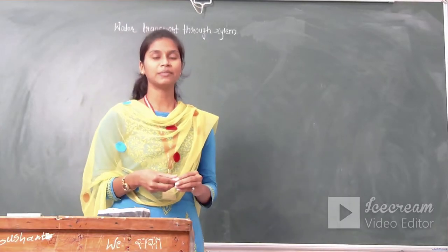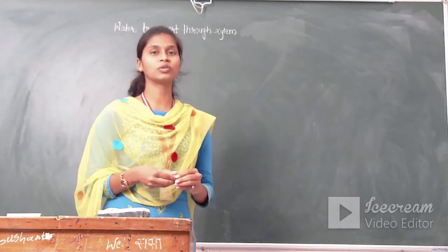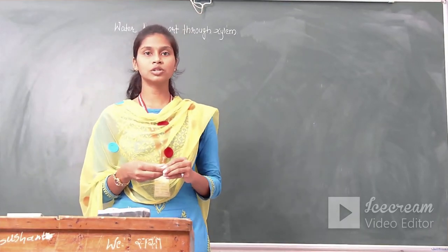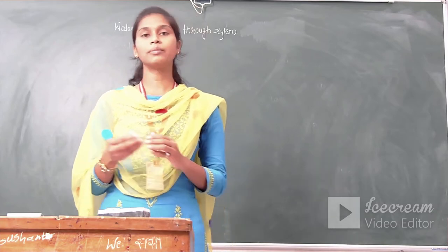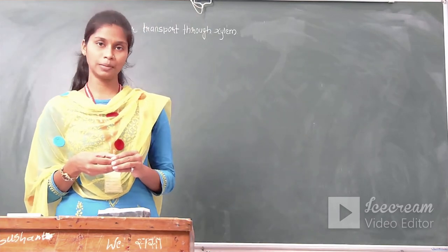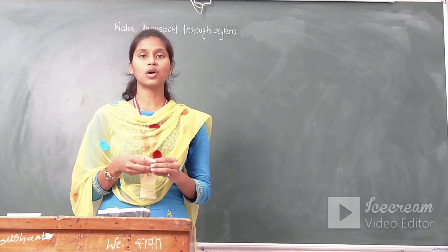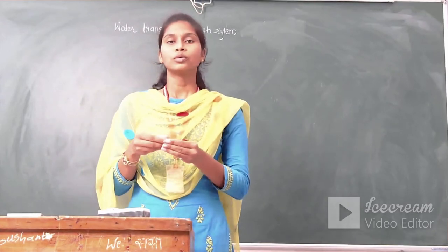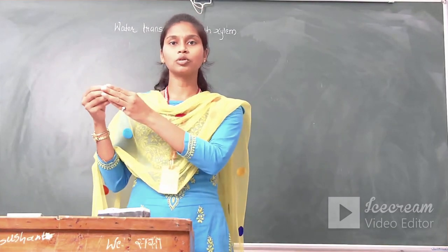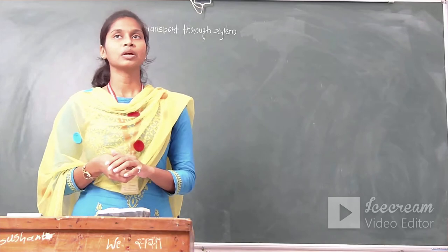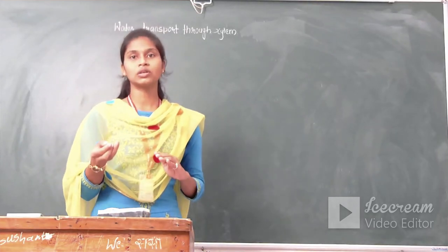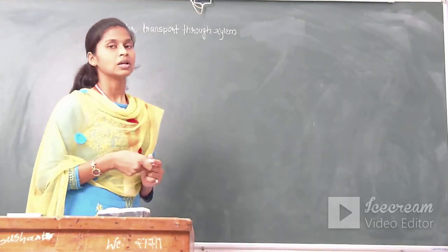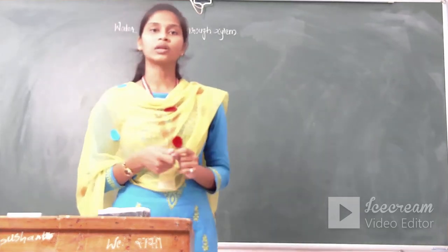Hello everyone, welcome again. In this lecture, we are going to study water transport through the xylem tissue. Xylem is the tissue which conducts water and minerals to the various parts of the plant. When plants absorb water from the soil by their roots, this water has to be conducted up to all parts of the plant. This conduction of water is carried out by a tissue known as xylem, which is a water-conducting tissue.